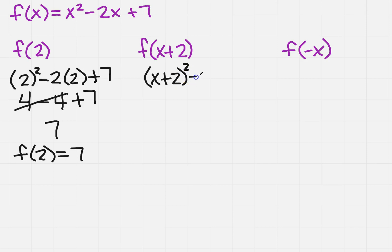So I've got x plus 2 squared minus 2 times x plus 2 plus 7. So I need to simplify this. So I'm going to get x squared plus 4x plus 4 minus 2x minus 4 plus 7.